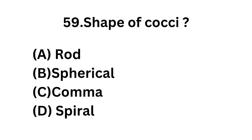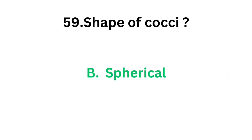Question number 59: Shape of cocci. Option A: Rod. Option B: Spherical. Option C: Comma. Option D: Spiral. Rod shape is bacillus; comma shape is Vibrio; spiral shape is for Treponema pallidum, Spirillum, etc. So the correct answer is option B, spherical. Shape of cocci is spherical, or spherical bacteria are called cocci.